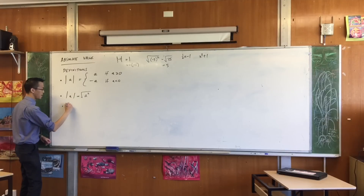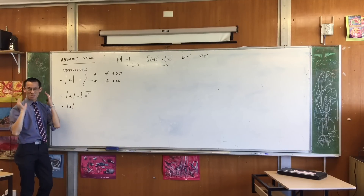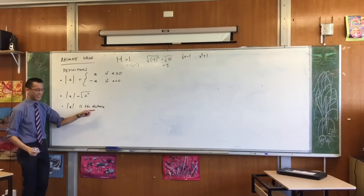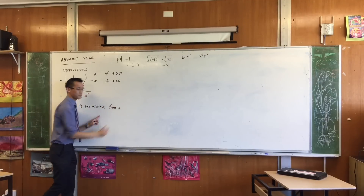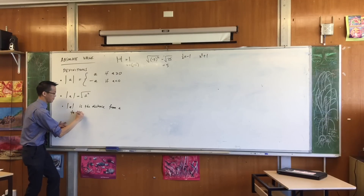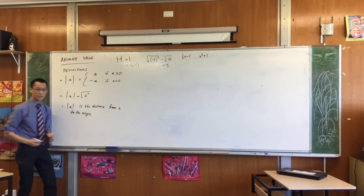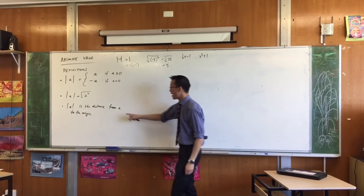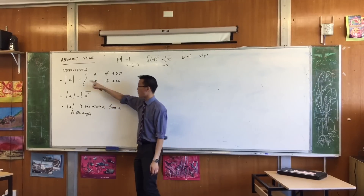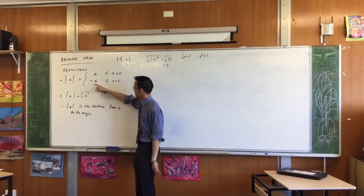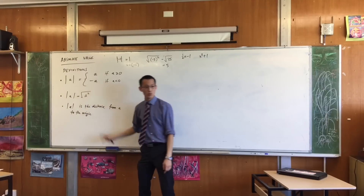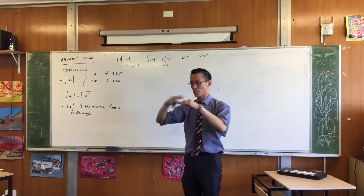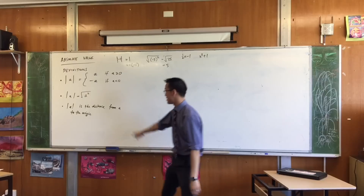The absolute value of A — and I actually think this is the most useful one going forward — is the distance from A to the origin. That's what Amaya was saying. It's the magnitude of how far you've gone. To find the distance of a number from the origin, like five, the distance is five. The distance of negative five is also five. This becomes more useful later because numbers aren't just one-dimensional — they can be two-dimensional and inhabit a plane, and this distance definition is really important.